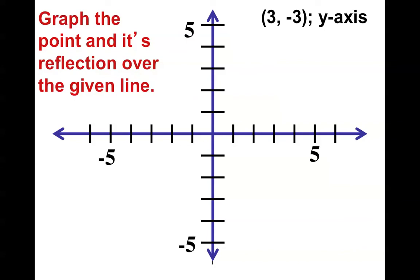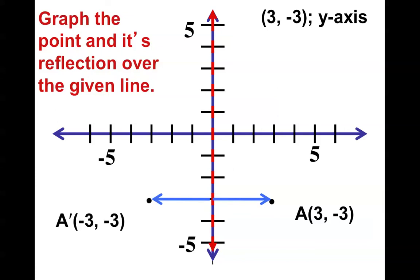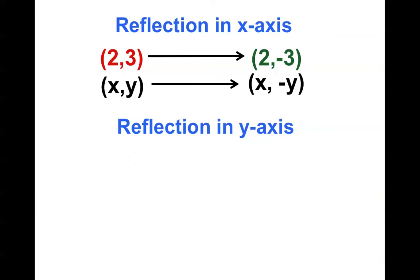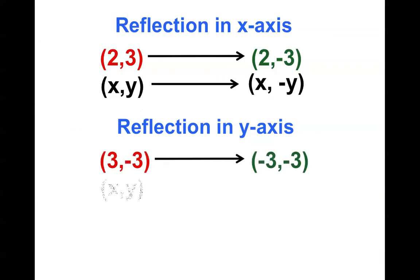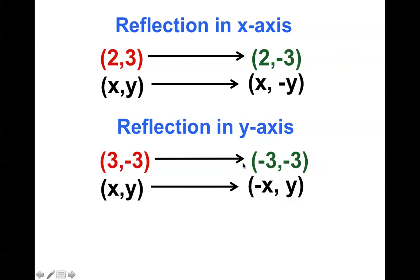What if I wanted to reflect this point in the y-axis? Here's the point, here's my line of reflection. I am three steps away from the y-axis. Therefore, my image point would have to be three steps away on the other side of the y-axis. Notice that when reflecting on the y-axis, it's the x-coordinate that becomes the opposite — the x-coordinate went from 3 to negative 3.